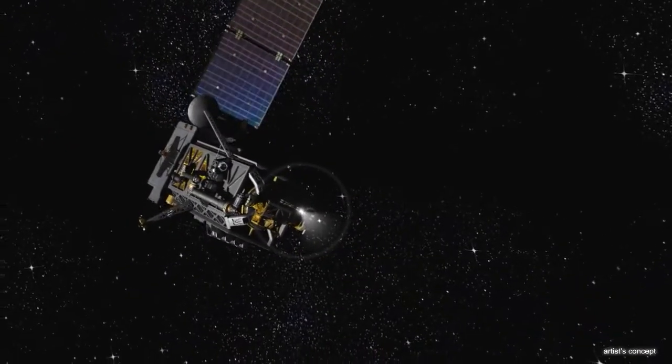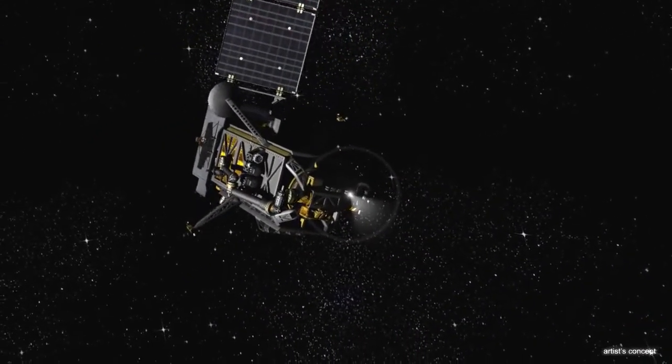Copy approach. Designate Phoenix 7-Niner. We'll take their possible conjunction and verify trajectory. Over.